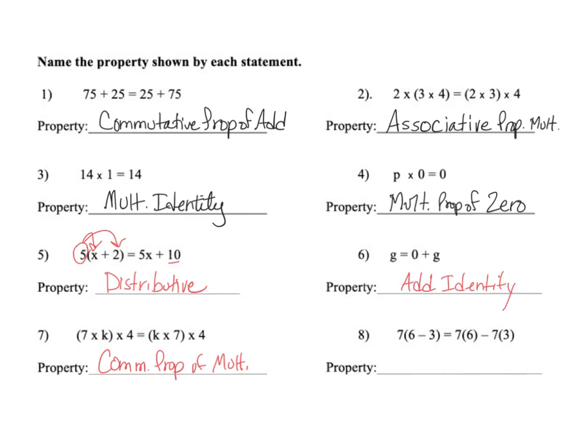And then again, a repeat for number 8. We have 7 on the outside of parentheses. It's showing me that it's being multiplied times 6, which is the first term inside. And it's being multiplied times negative 3, which is the second term inside. So we are showing the distributive property here.